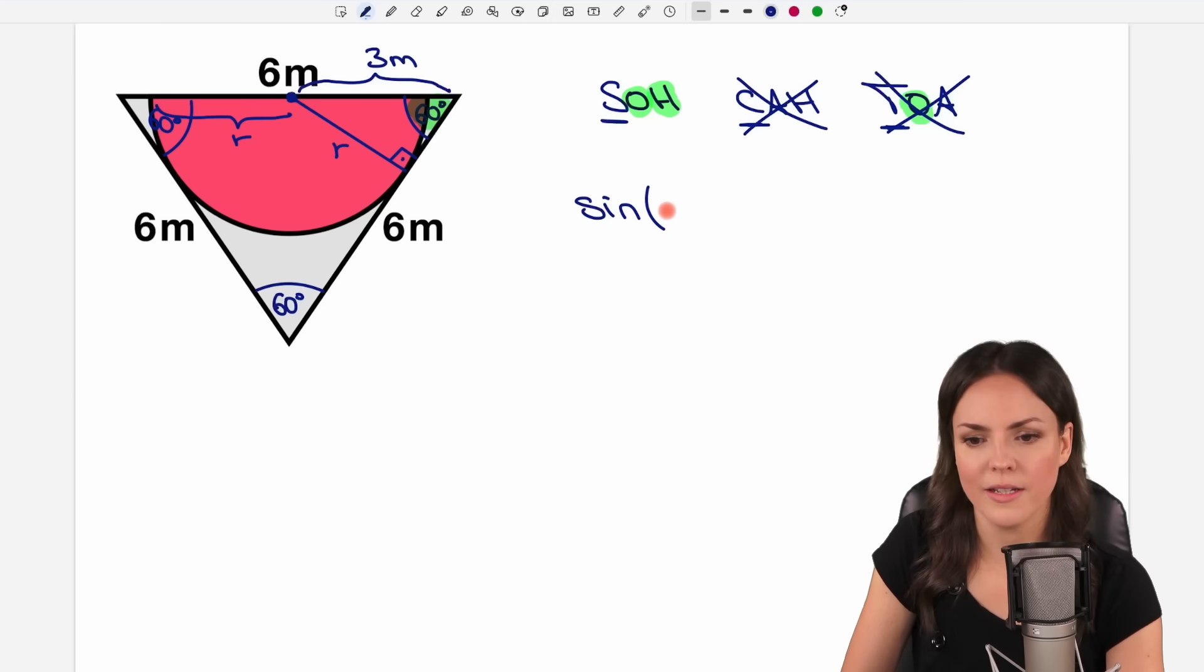Then sine of 60 degrees equals the opposite side divided by the hypotenuse. So the opposite side is our r and we divide it by the hypotenuse by three. Now we have one equation and we can solve this for r for our radius. We just have to get rid of this divided by three.